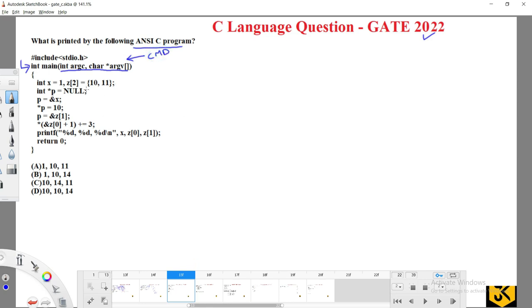Here they declared a variable called x which is integer with the value 1, and they have declared an array z which contains two values, one is 10 and 11.